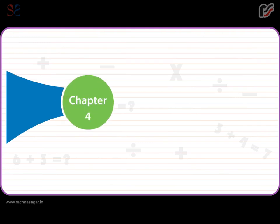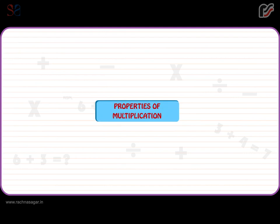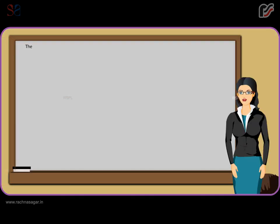Chapter 4: Multiplication. Properties of Multiplication. The product of a number and 1 is the number itself. For example, 365 x 1 is equal to 365.